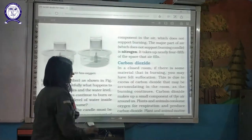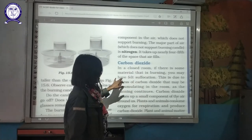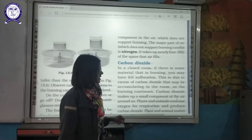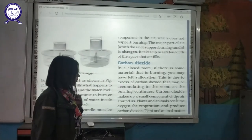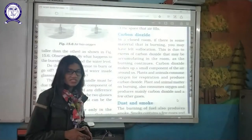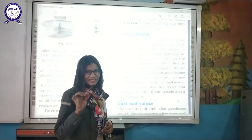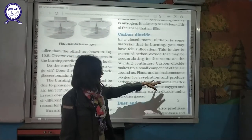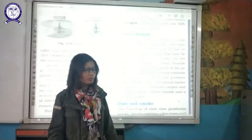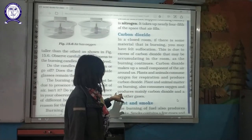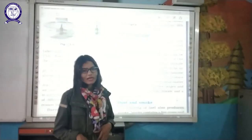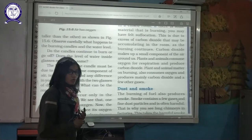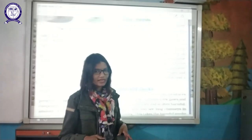Next component is carbon dioxide. In a closed room, if something is burning, you may feel suffocation. This is due to excess carbon dioxide accumulated in that room. Carbon dioxide makes up a small component of the air compared to oxygen and nitrogen. Plants and animals consume oxygen for respiration and produce carbon dioxide. On burning also, oxygen is consumed and carbon dioxide along with a few other gases is released. Carbon dioxide is also required by plants for photosynthesis.